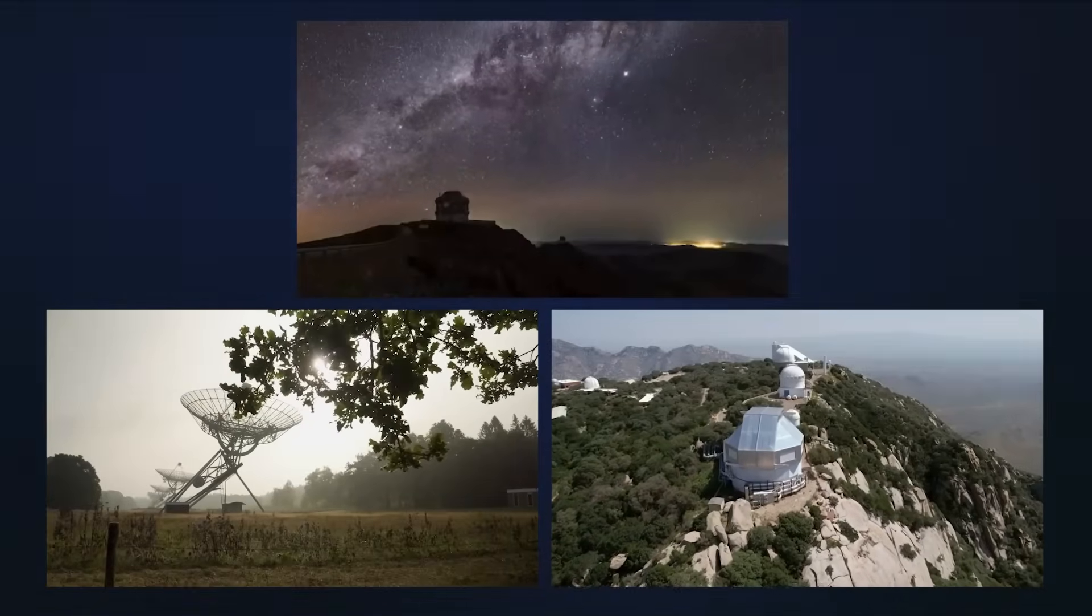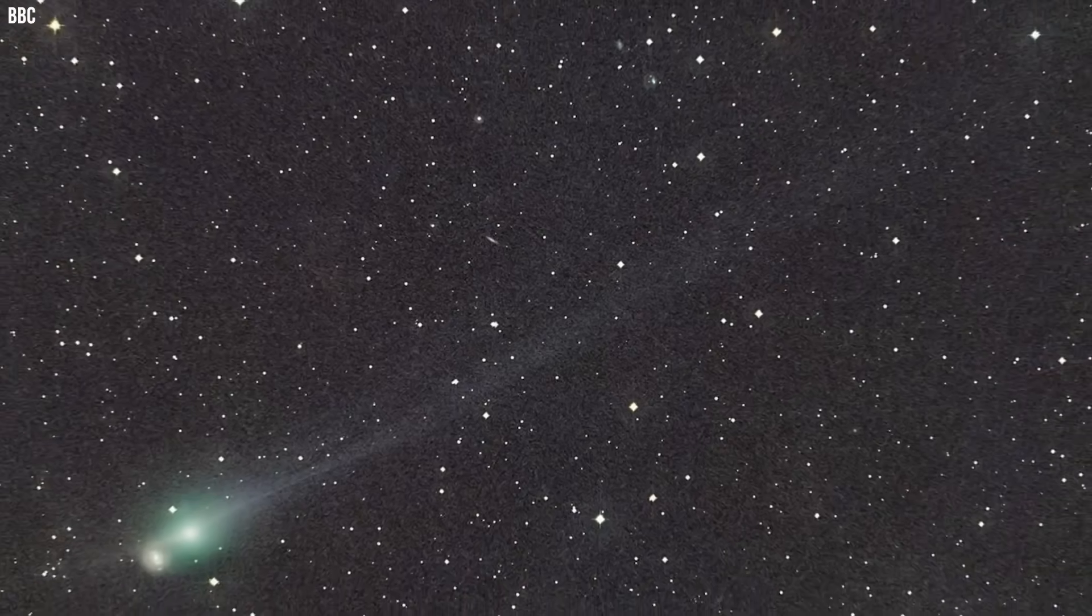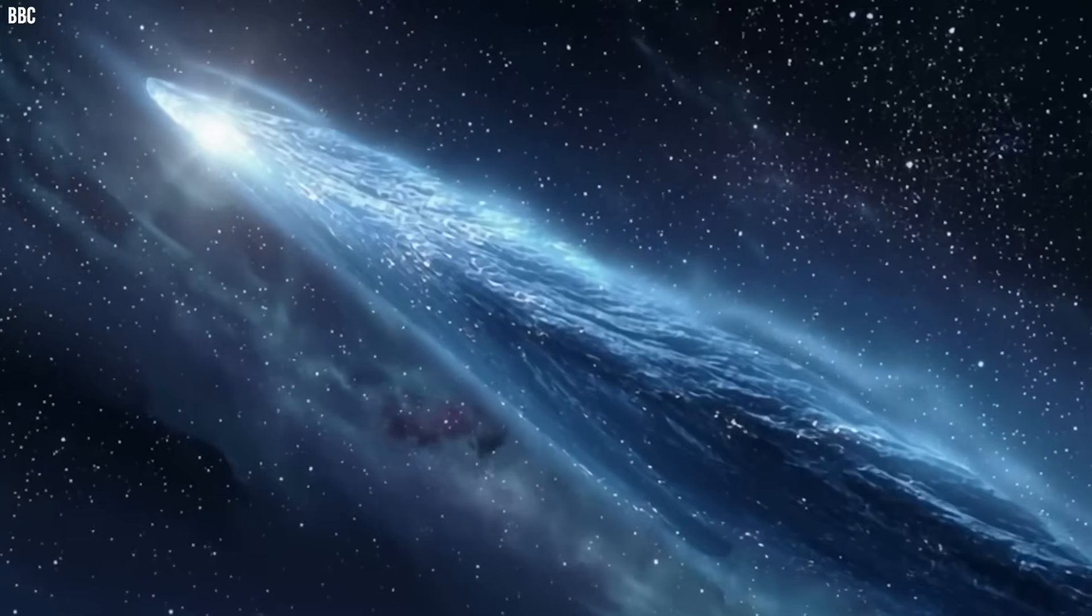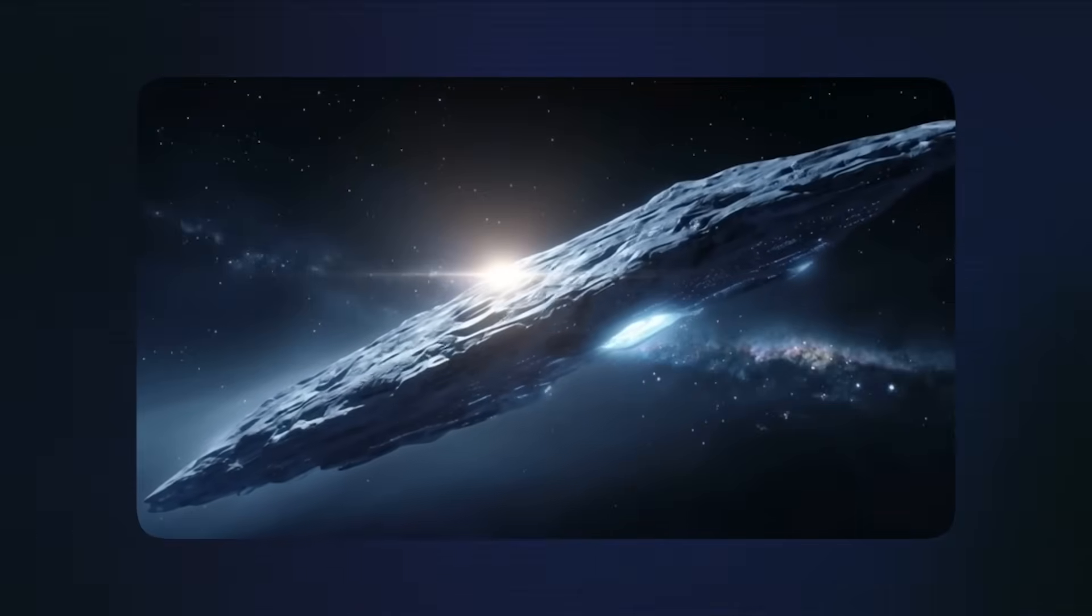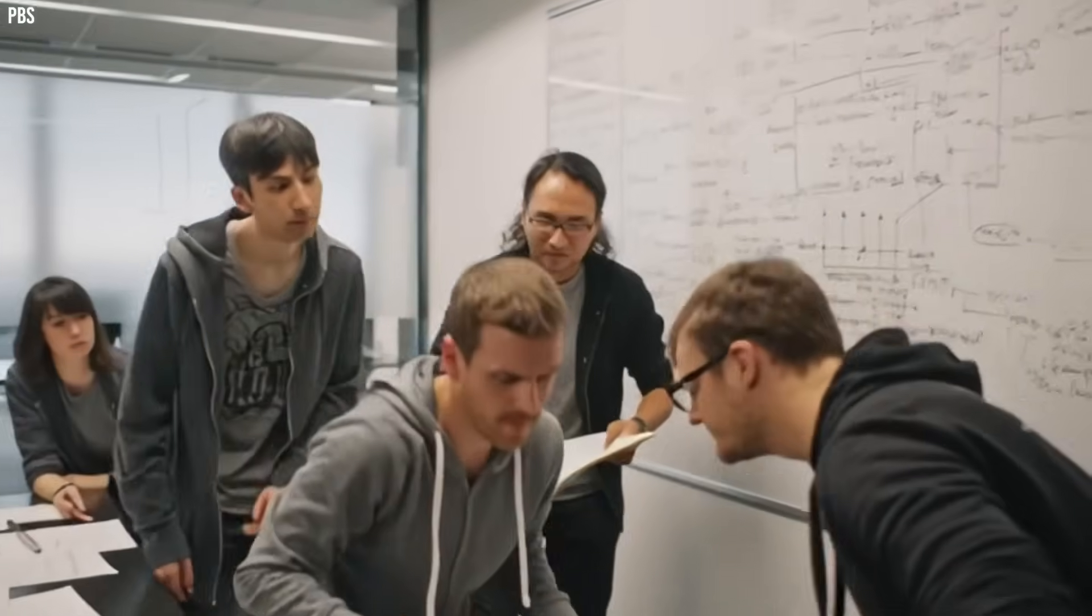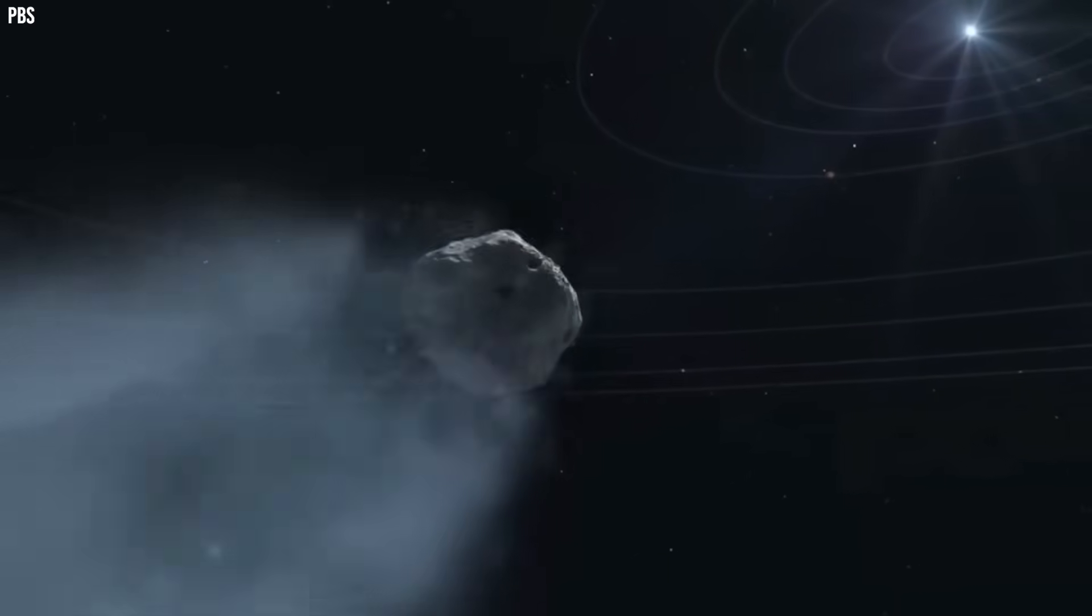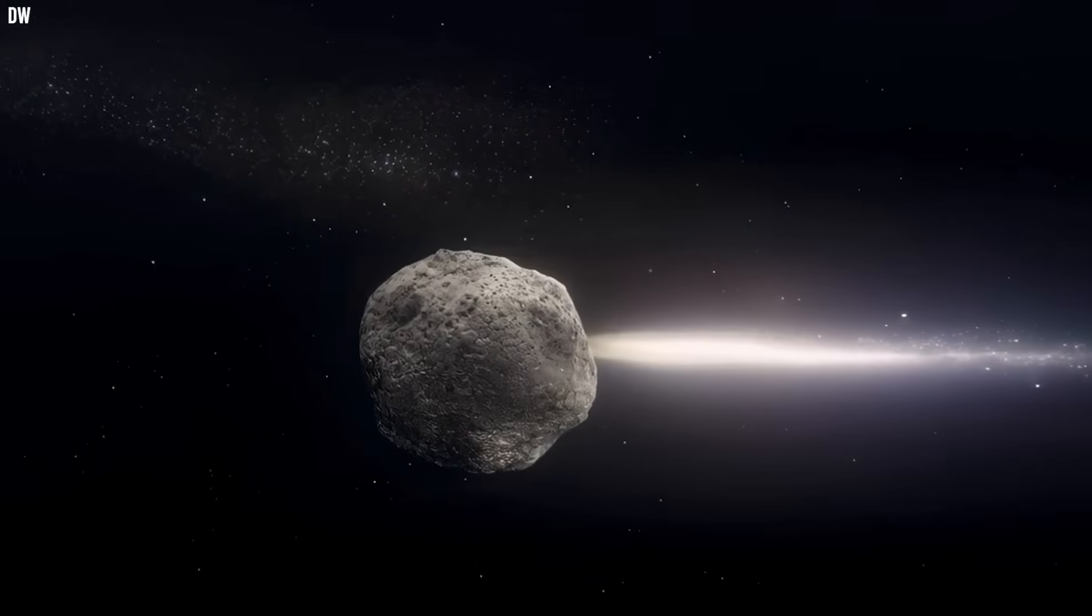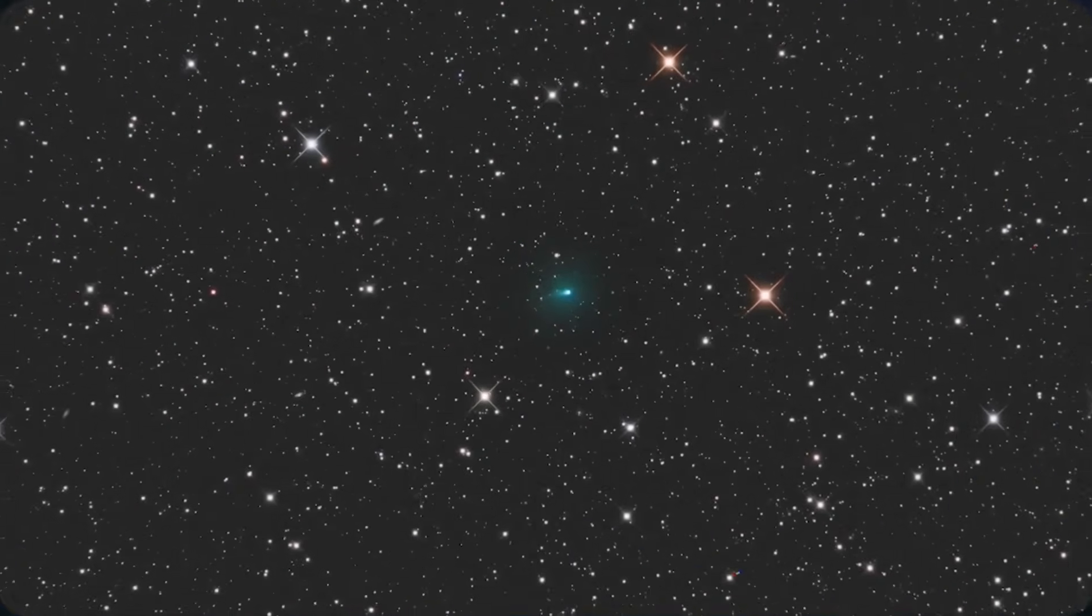Professional observatories on multiple continents began tracking the object immediately. Each new photograph confirmed what Mitsunioritra had stumbled upon. This interstellar visitor was acting unlike anything astronomers had ever witnessed. The implications were enormous. Scientists realized they were looking at something that would either completely revolutionize our understanding of natural space phenomena, or force them to seriously consider possibilities that most had never entertained. The astronomy world was about to be turned upside down.